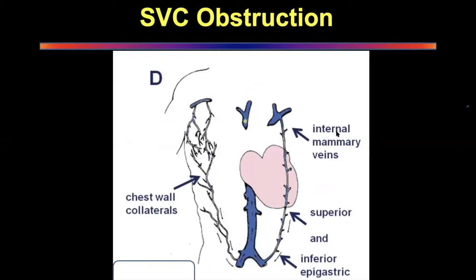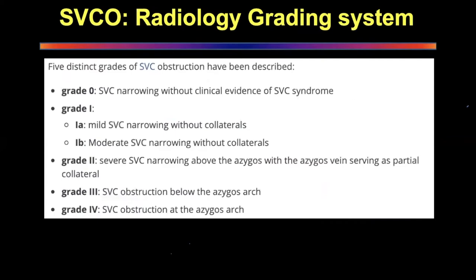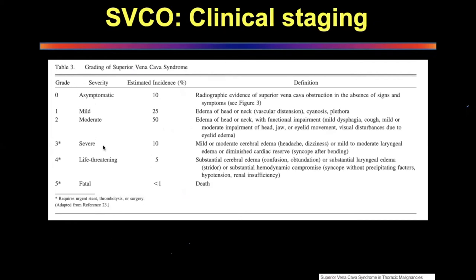The radiological grading goes from zero to four, similar to the anatomical system, but grade one is further divided into 1a and 1b — with and without collaterals. The clinical grading system, which is more important to clinicians, is based on symptoms: asymptomatic, mildly symptomatic, moderately symptomatic, severe, life-threatening, or fatal. Grades four and five require emergency intervention — you must go in urgently and place an SVC stent to reduce back pressure rather than waiting for a diagnosis.